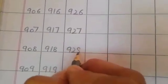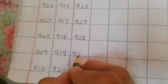926, 927, 928, 929. What comes after 929? 930.